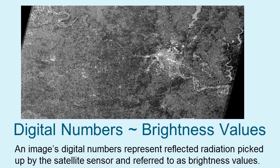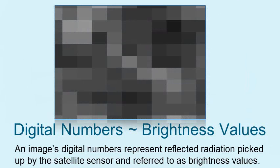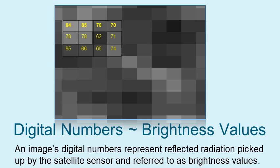Here you can see Band 1 of a sample Landsat 5 thematic mapper image depicting the city of Tulsa, Oklahoma. If we were to zoom in to the pixel level, we would see the individual differences between pixels as expressed by their differing shades of black, white, and grey. These monochromatic differences correspond to the brightness values. If we were able to look at the actual digital numbers assigned to each pixel, we might observe a raster with numbers such as these, with each number representing the brightness value recorded by the satellite sensor.